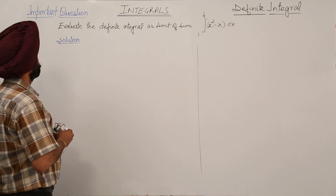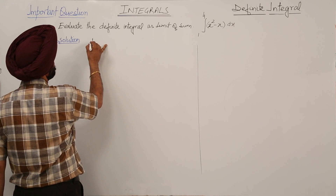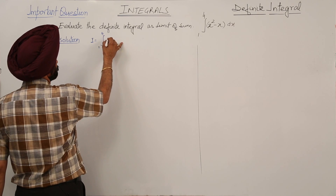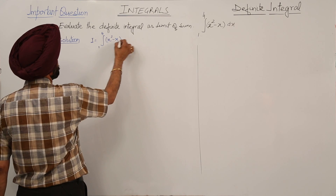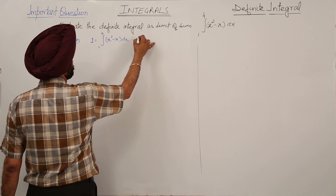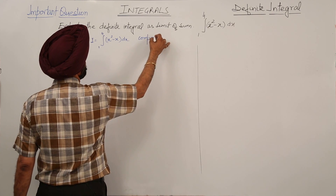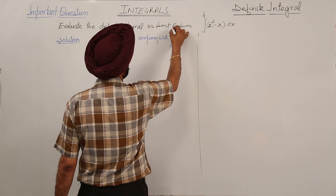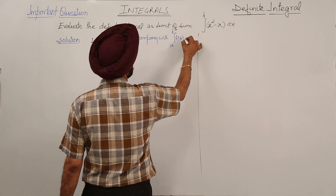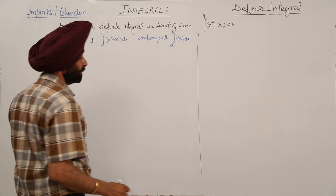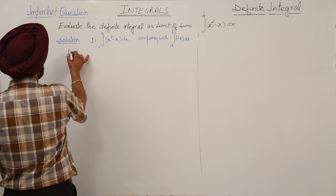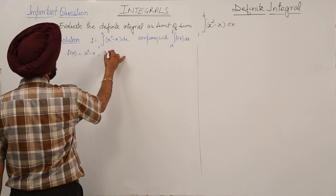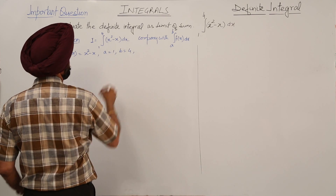Going for the important question now. The question is the integral from 1 to 4 of (x² - x) dx. Comparing with the standard form ∫ₐᵇ f(x) dx, we get: f(x) = x² - x, a = 1, b = 4.